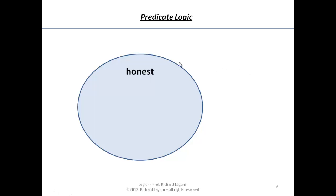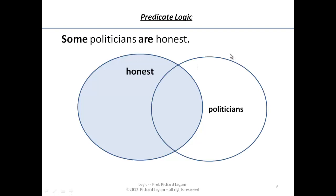Some politicians are honest. Consider the circle that contains all of the things that are honest. If we're saying some politicians are honest, we're looking at the circle representing the category of every person that's a politician. Some of those people are also in the category of honesty. So here the Venn diagram explains exactly what that generalization means.